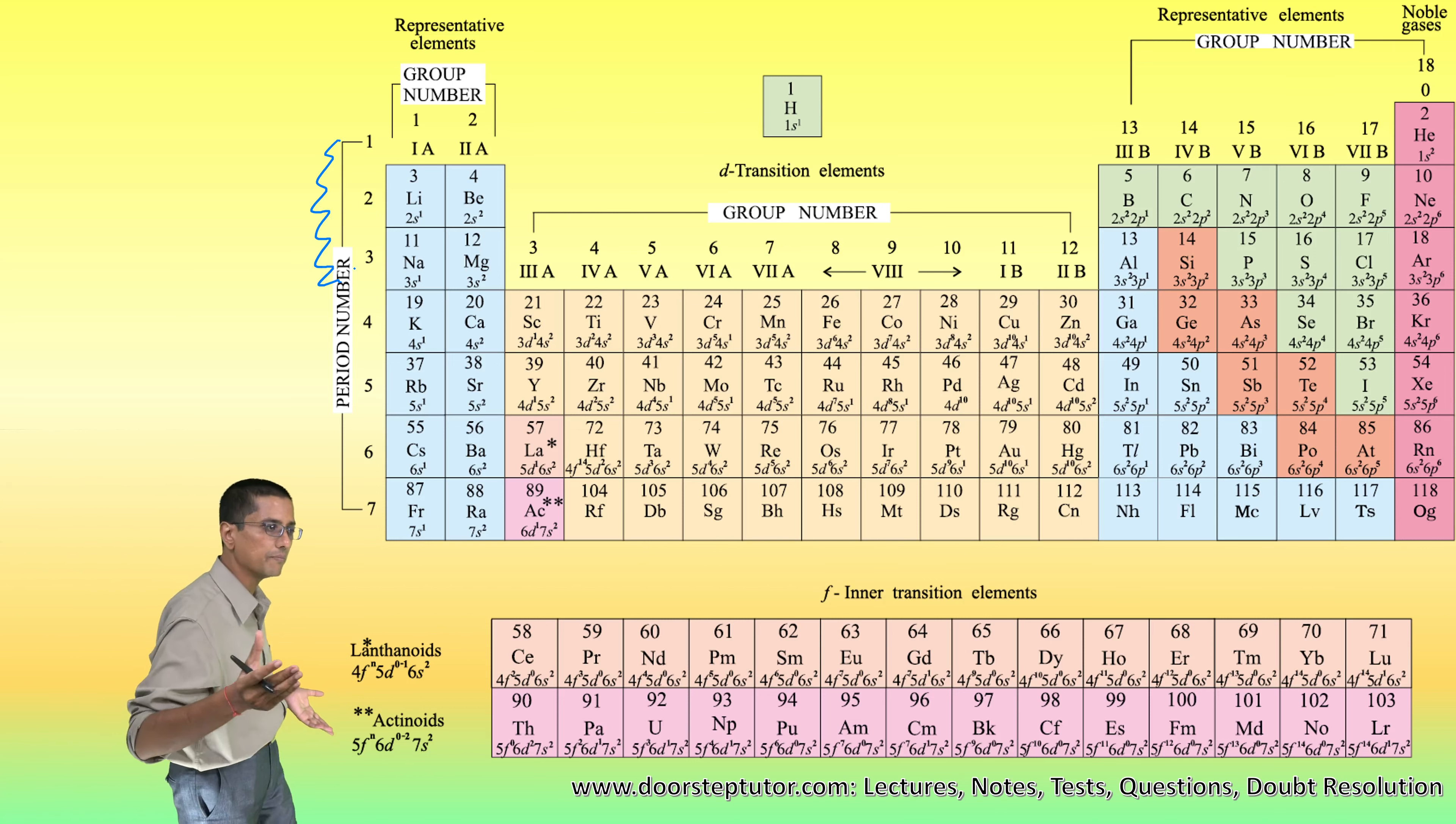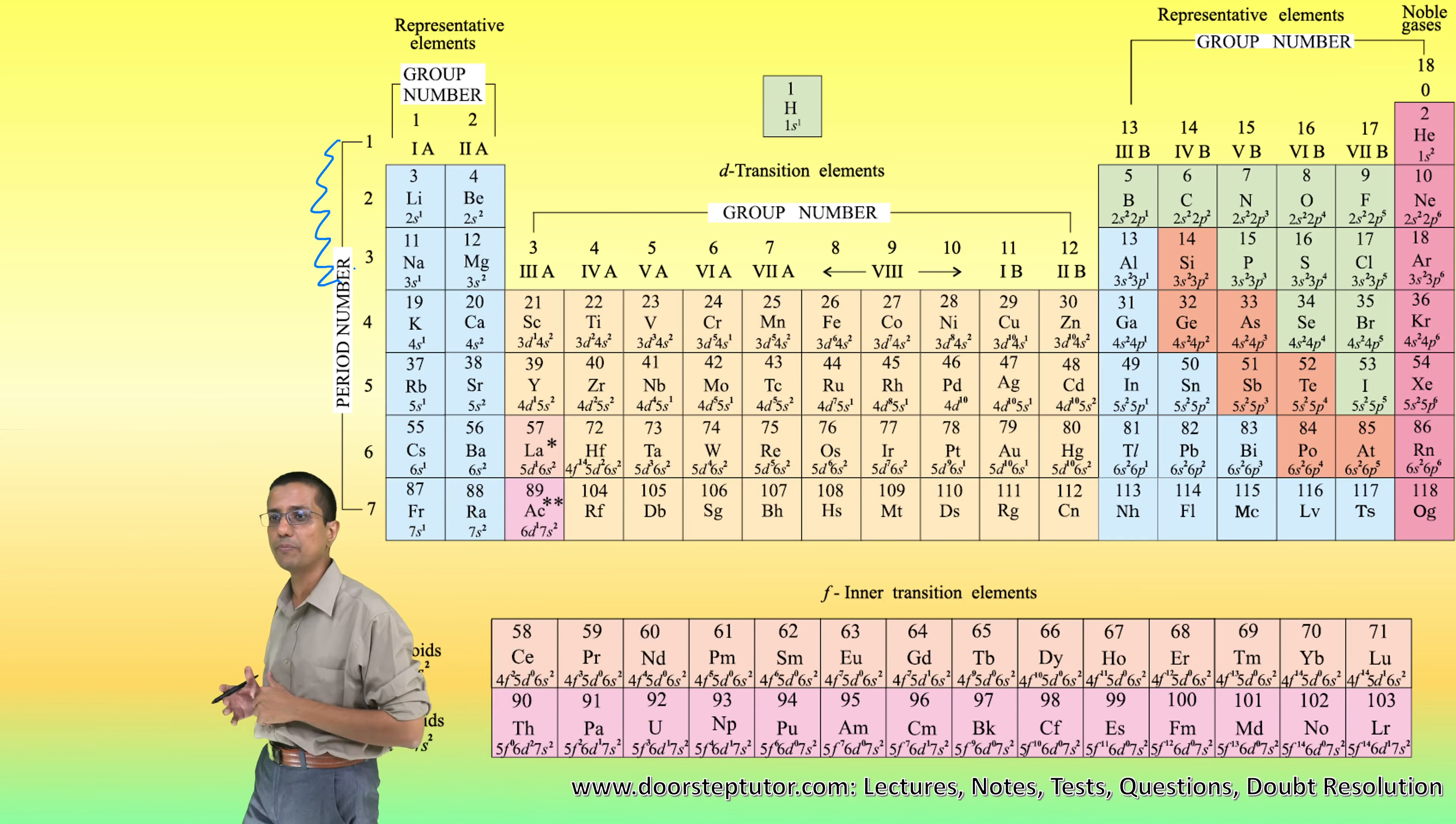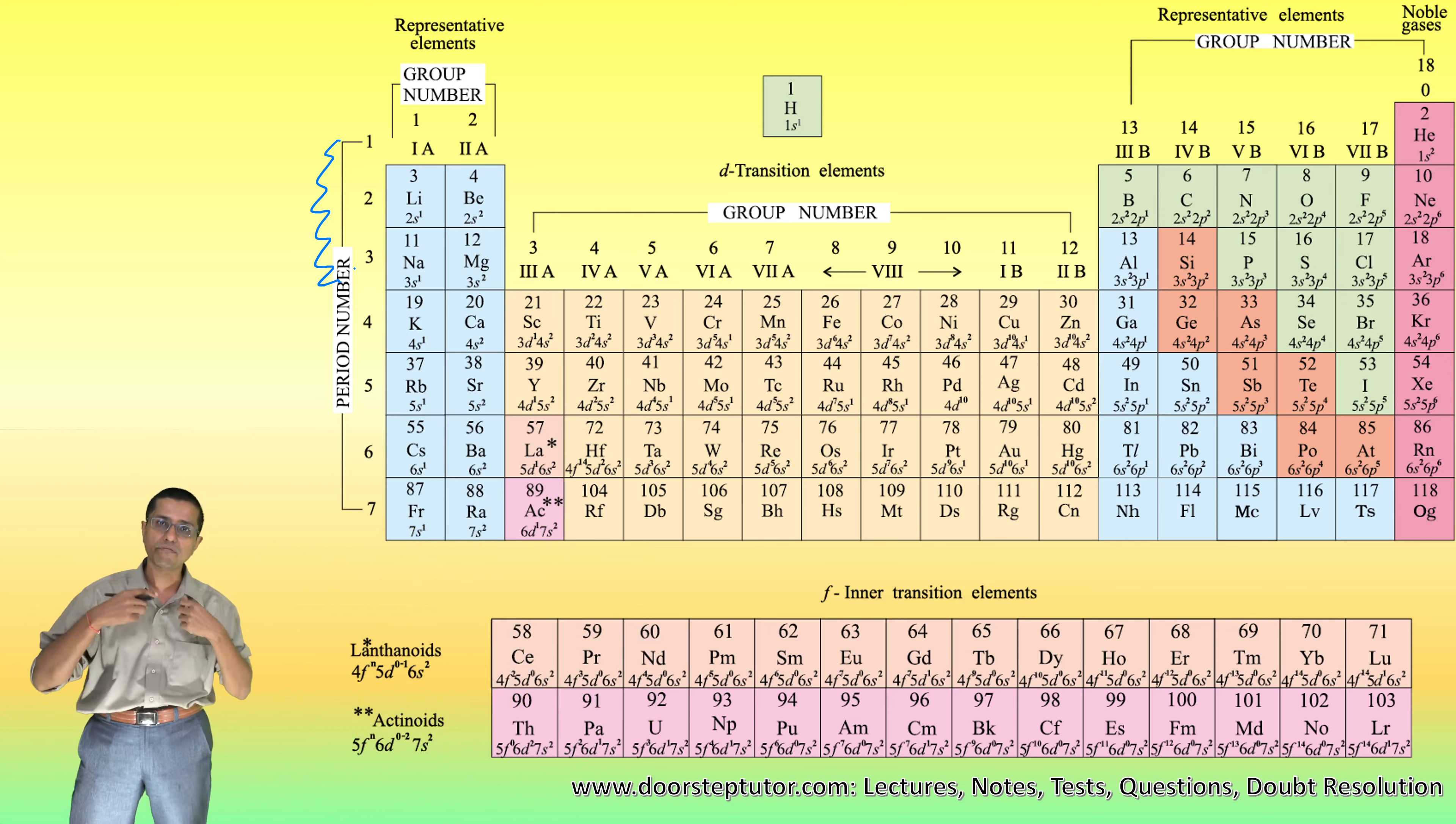As soon as we come to the d-block elements or the transition elements, the d orbitals start coming into play and they also become the valence electrons. So this statement actually becomes false.